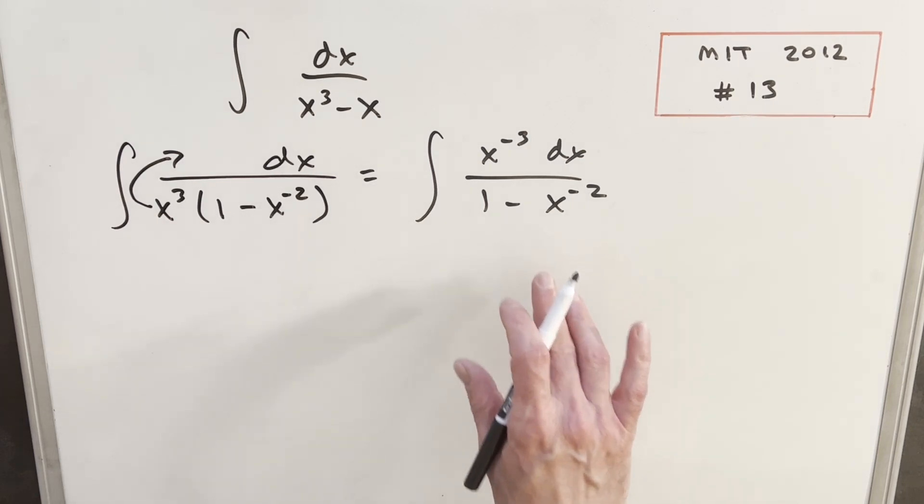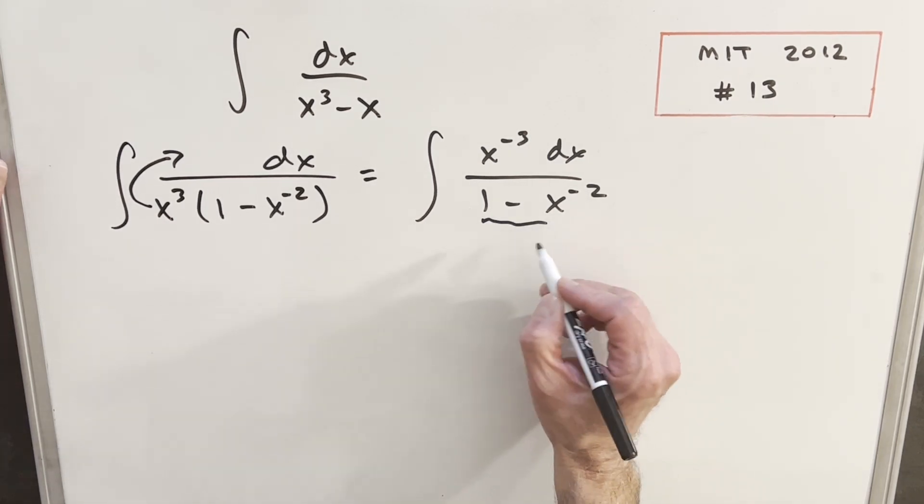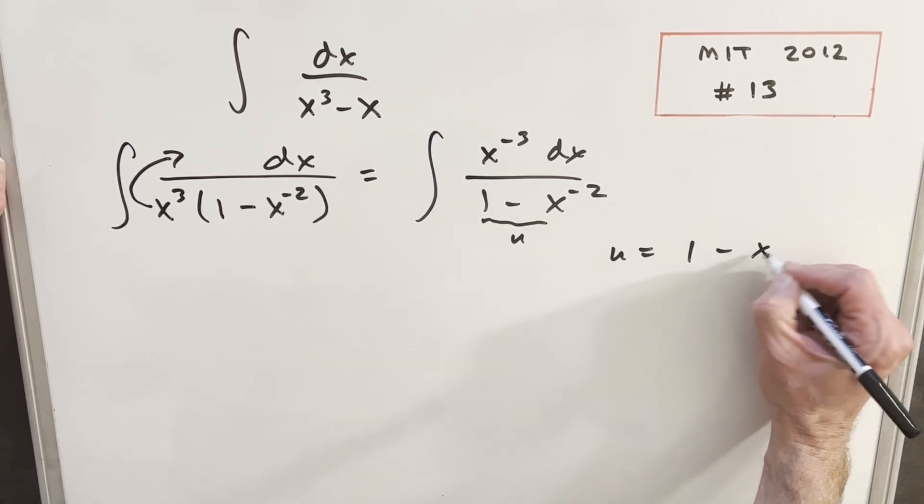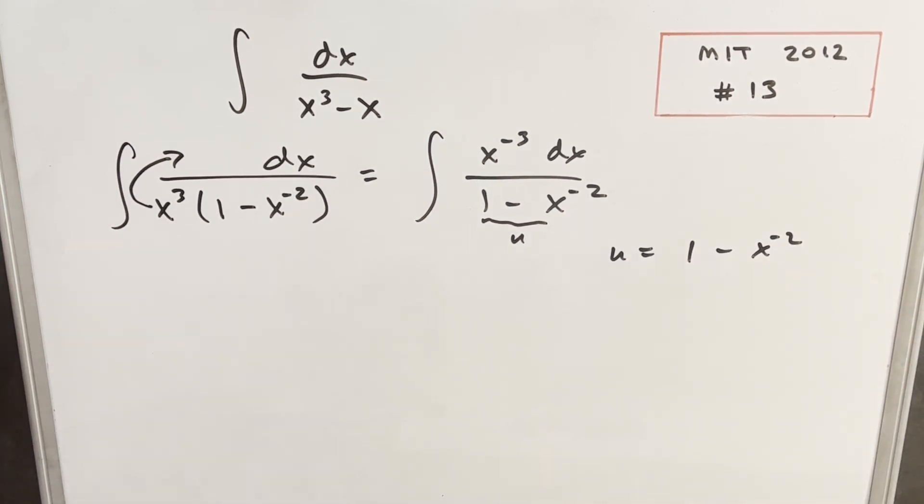And the reason this is nice is because it's going to set up our u-substitution. I'm just going to make my whole denominator the u. So we'll set u equal to 1 minus x to the negative 2. Then we'll take our derivative.